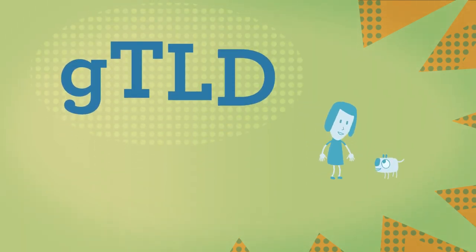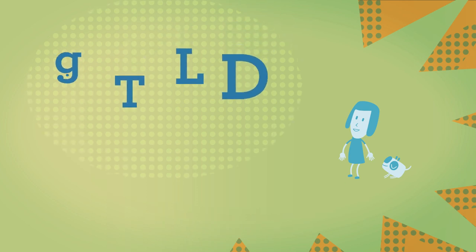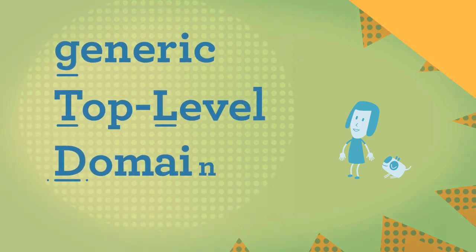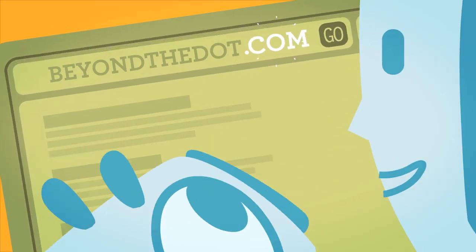The letters beyond the dot in a web address are known as a GTLD. GTLD stands for Generic Top Level Domain. A GTLD is what you see to the right of the dot in a domain name.